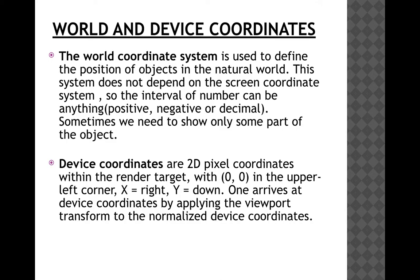The world coordinate system is used to define the position of objects in the natural world. It is a right-handed Cartesian coordinate system in which we describe the coordinates of the picture to be displayed. This system does not depend on any screen coordinate system.